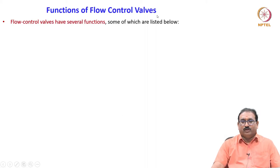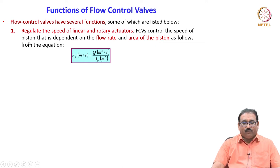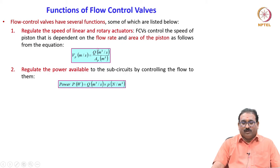Now we will see the functions of flow control valves. Flow control valves have several functions. The first one is to regulate the speed of linear and rotary actuators. FCVs control the speed of the piston, which is dependent on the flow rate and the area of the piston as follows from the continuity equation: Q = A × V, so velocity of the piston equals Q divided by AP. If you control Q, you automatically control the velocity.